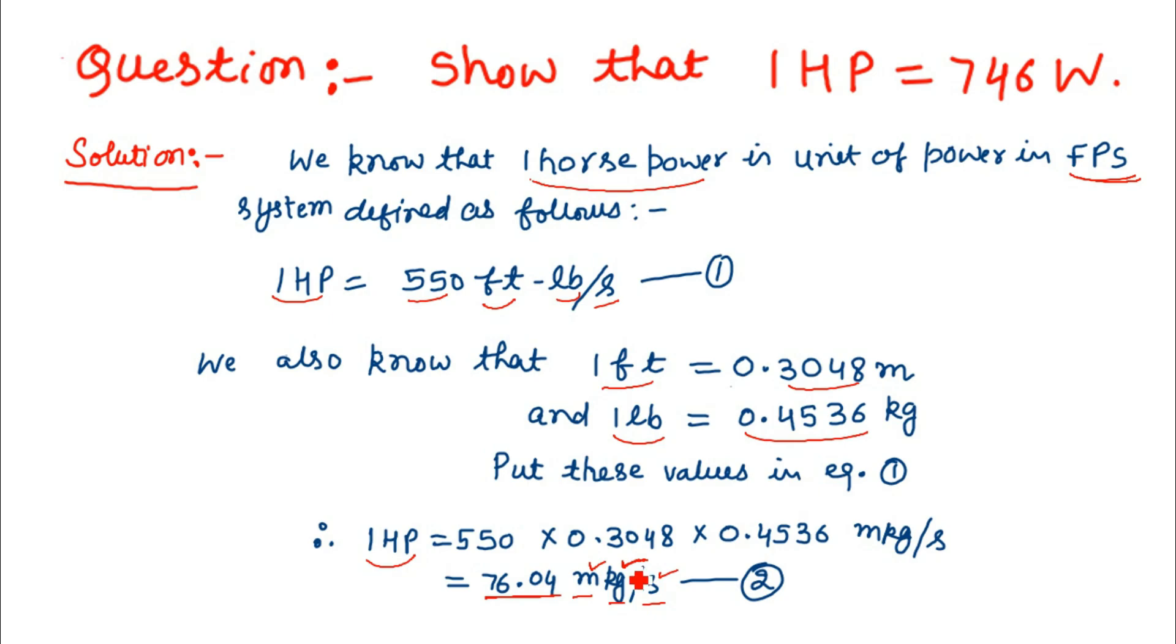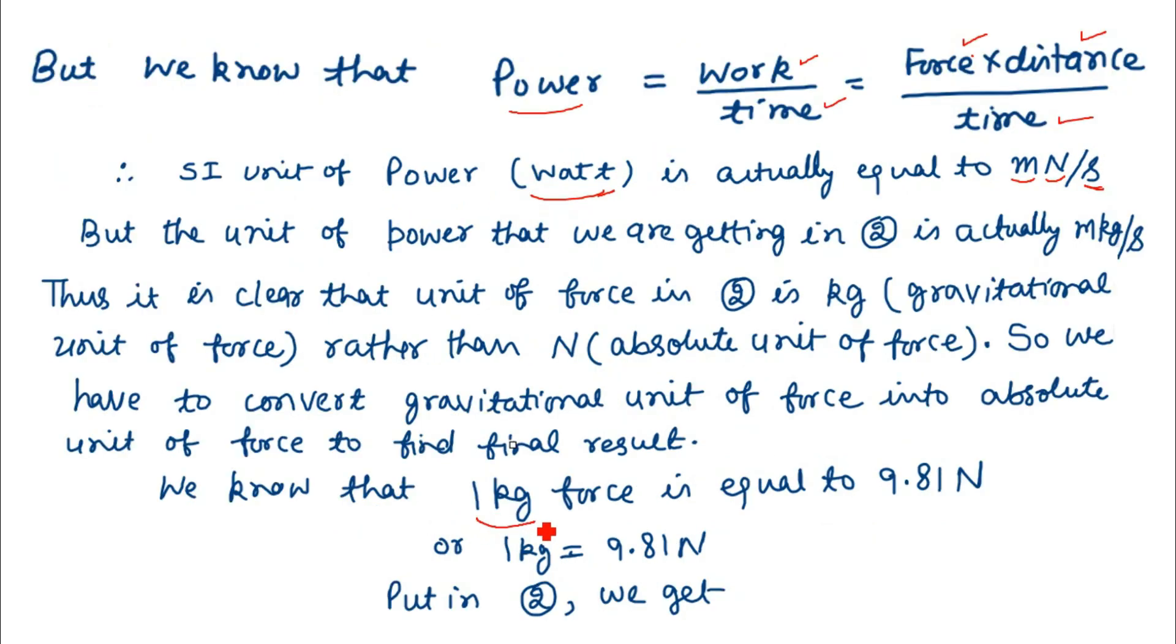We must convert this gravitational unit of force (kilogram) into the absolute unit (newton). We know that 1 kilogram of force equals 9.81 newtons, or 1 kg = 9.81 N.